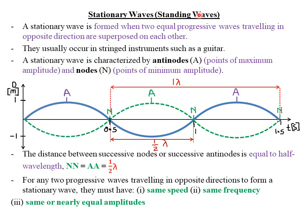Next, we are looking at stationary waves, also called standing waves. A stationary wave is formed when two equal progressive waves traveling in opposite directions are superposed on each other. Superposition means the waves are combining as they travel in opposite directions and are out of phase. Stationary waves usually occur in stringed instruments, for example in a guitar.